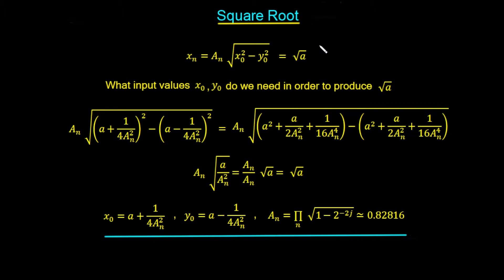So the first one we're going to look at here is how to generate a square root. From the previous video, you'll note that the value for our final x, which is our xₙ, is given by aₙ times the square root of x₀² minus y₀². So from this we can say that we have a method of generating a square root. But the problem is it's not quite in the right format, because this is generating the square root of x₀² minus y₀². What we want to do is generate the square root of a number — we'll call that number a. So we're looking to find the square root of a.